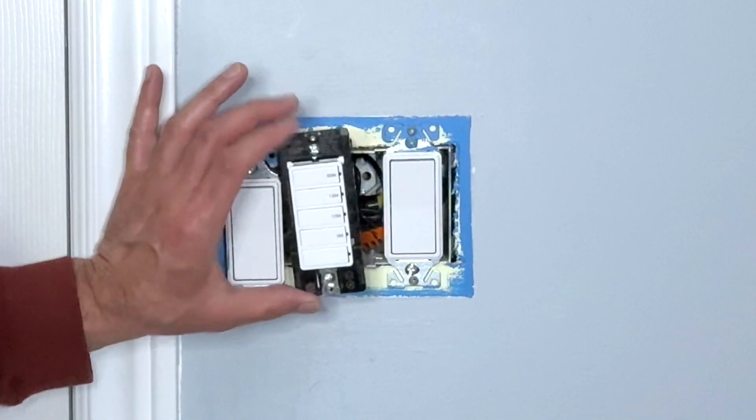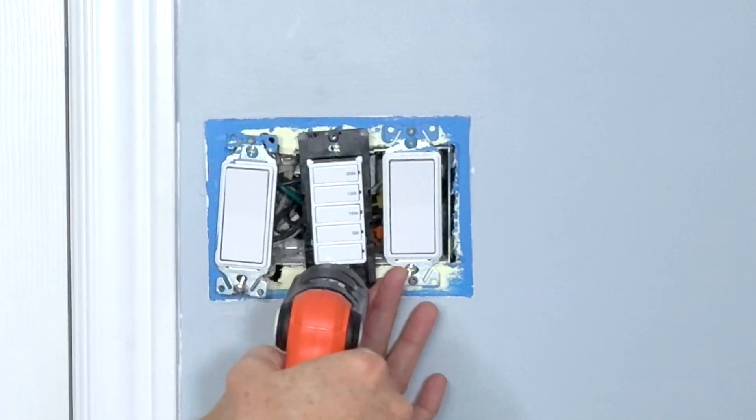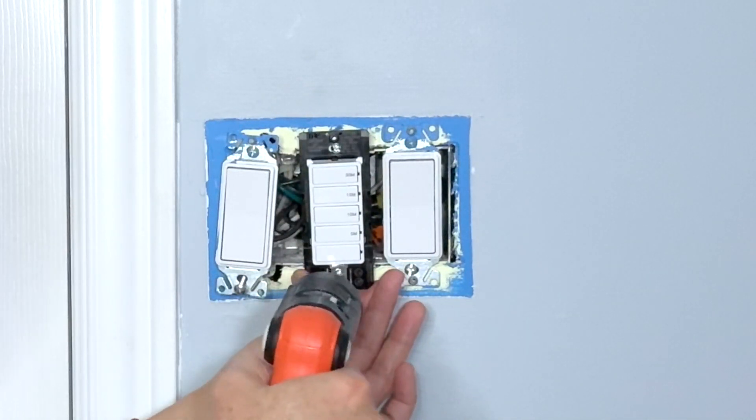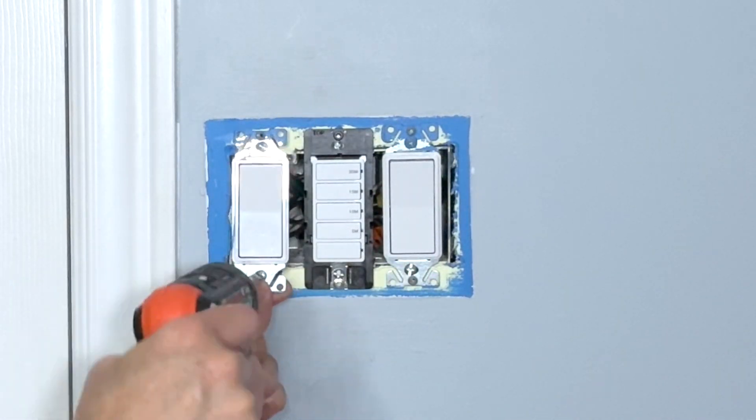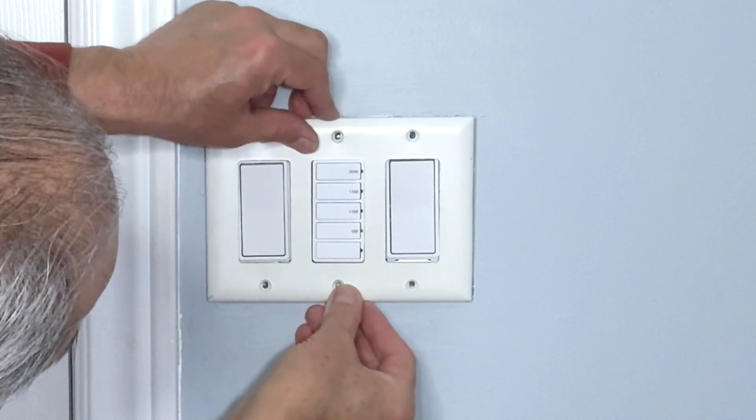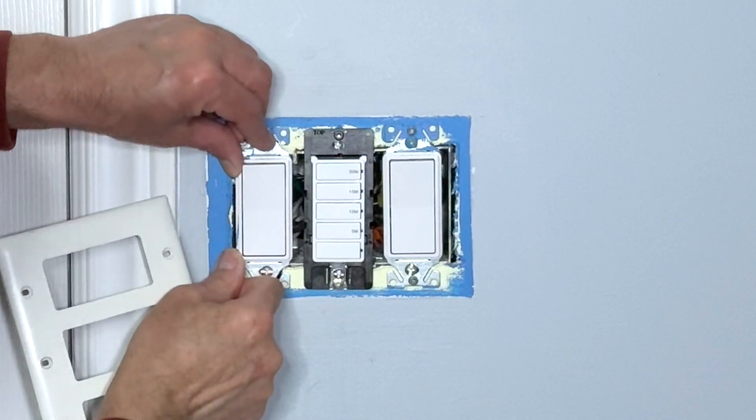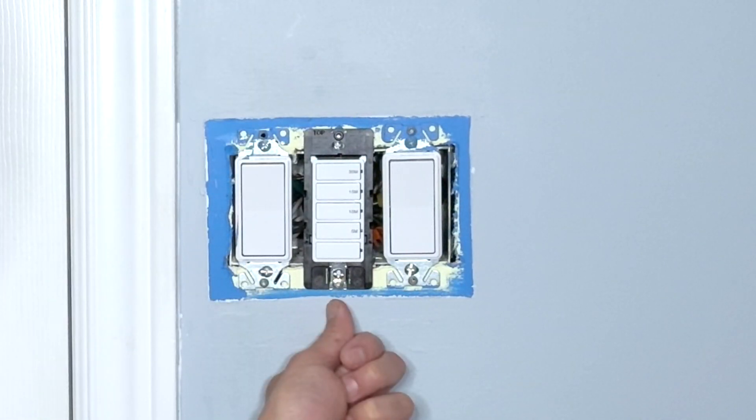This switch goes first. Make sure the marking is upright. I'll leave them a bit loose right now. I need to test it and also I need to make sure that the plate will nicely fit on top of them. I will turn on power and test the switches before I install the wall plate.